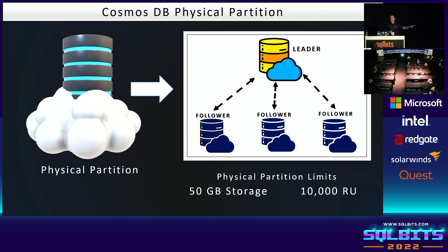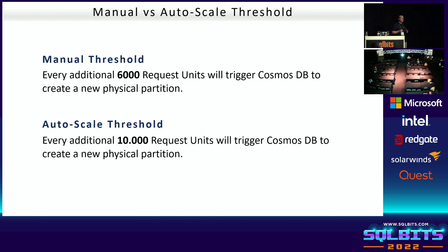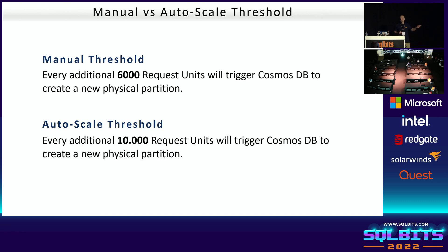Cosmos DB does not wait until you hit those two limits. If you have manual throughput, as soon as you hit 6,000 request units, Cosmos DB triggers a new physical partition. With autoscale, Cosmos DB gives you a new physical partition for each 10,000 request units. Be careful: if you end up with two physical partitions and then scale down, physical partitions won't merge back. You cannot put them back together.